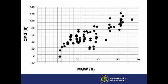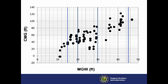Next, as shown on this graph, we plotted in feet the Cockpit to Main Gear Distance, or CMG, on the Y-axis versus the MGW on the X-axis for 125 airplane models. We divided the models into groups corresponding to the MGW for the current standard taxiway widths, as shown by the blue vertical lines added to this graph.